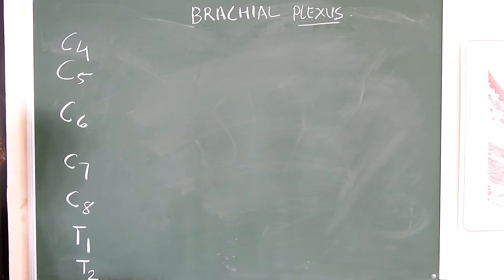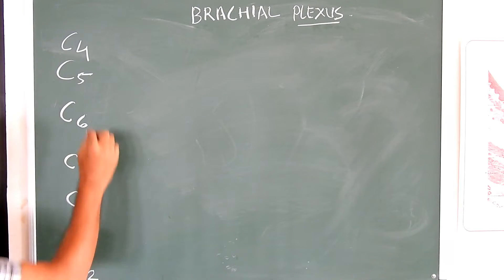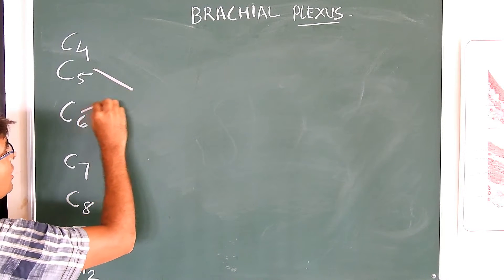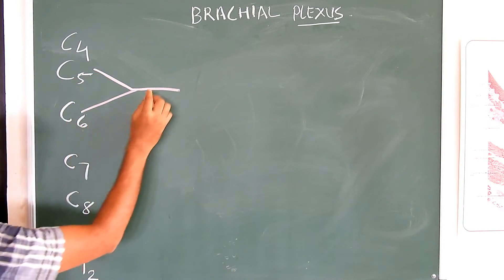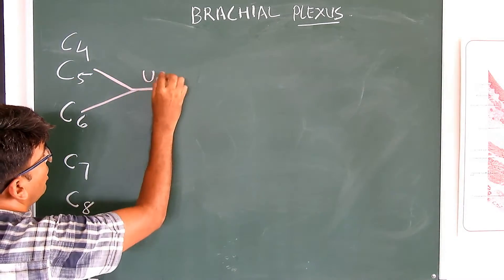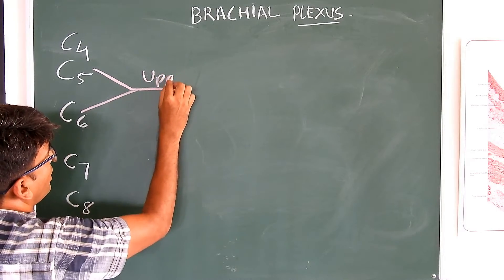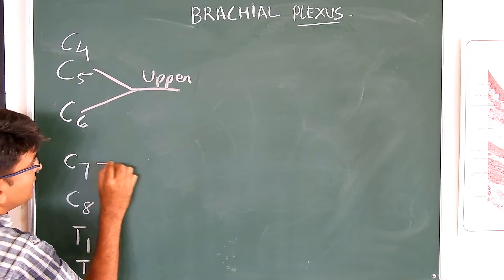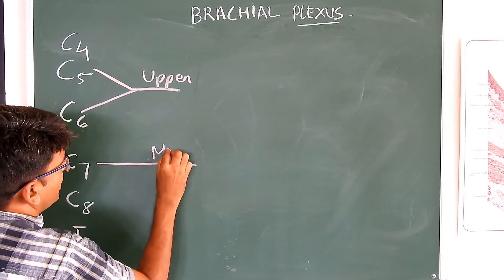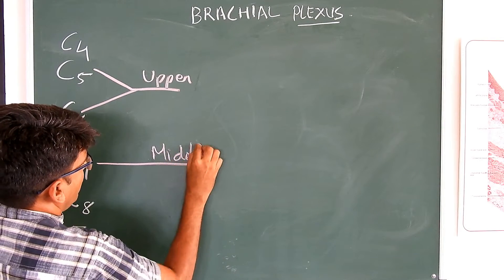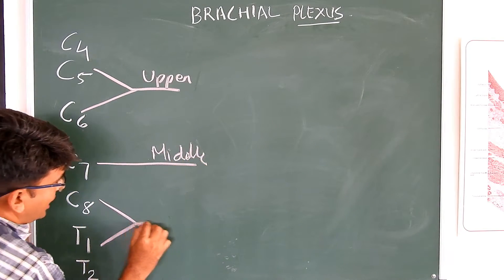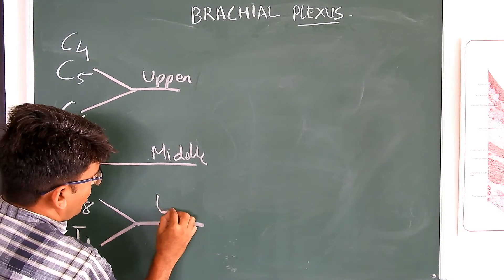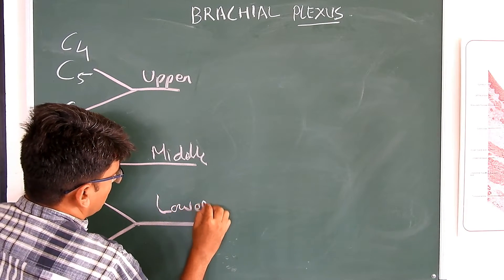These five roots combine and convert into trunks. C5 and C6 form the upper trunk. C7 forms the middle trunk. And C8 and T1 form the lower trunk.